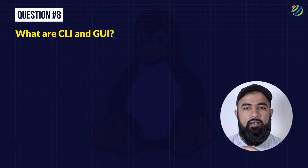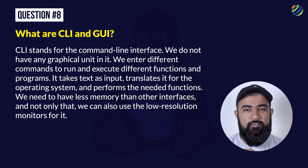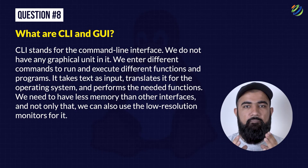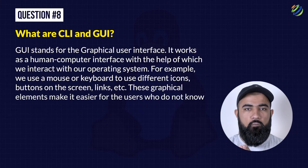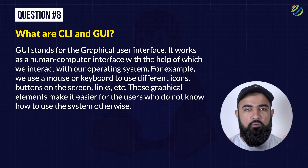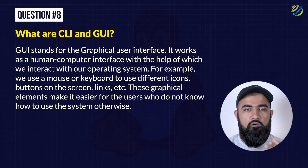Question 8: What are CLI and GUI? CLI stands for Command Line Interface — we do not have any graphical unit in it. We enter different commands to run and execute different functions and programs. It takes text as input, translates it for the operating system, and then performs the needed function. We need less memory than other interfaces and can also use a low-resolution monitor. GUI stands for Graphical User Interface. It works as a human-computer interface with which we can interact with our operating system, using a mouse or keyboard to interact with icons, buttons, links, etc. on the screen. These graphical elements make it easier for users who do not know how to use the system otherwise.